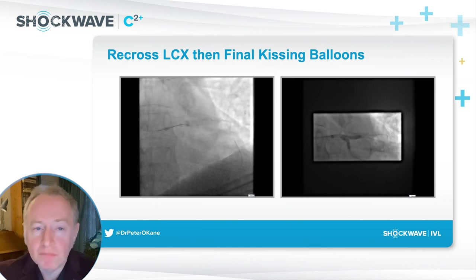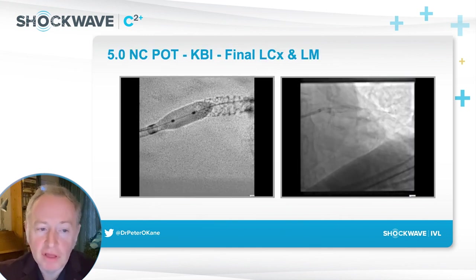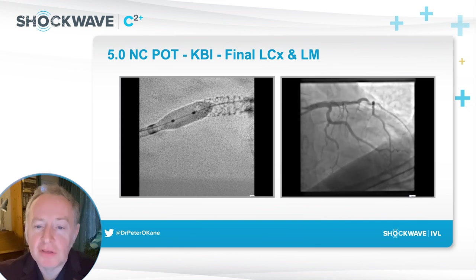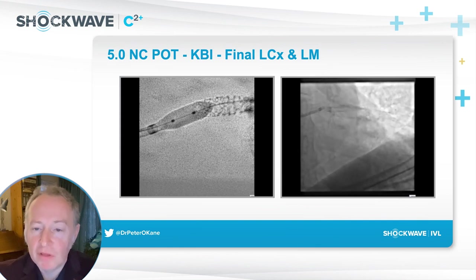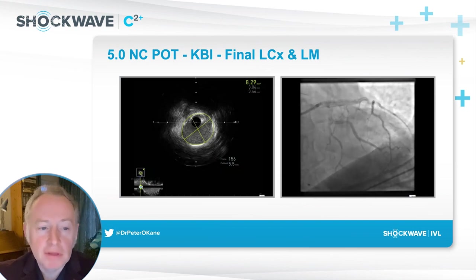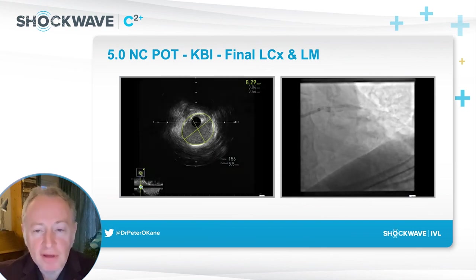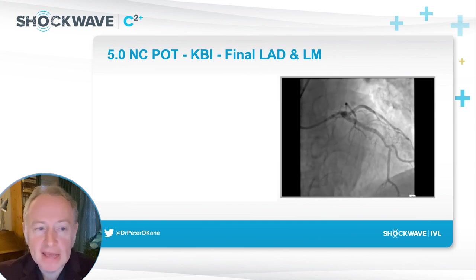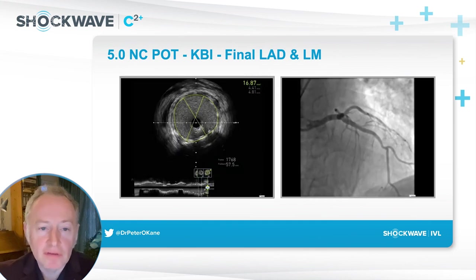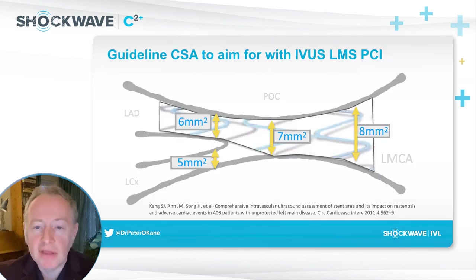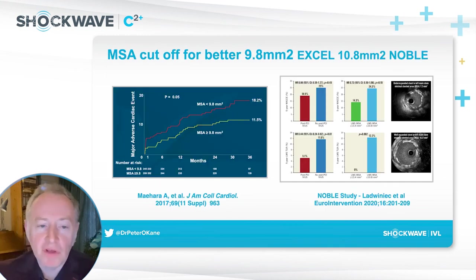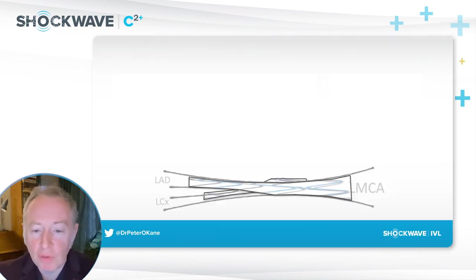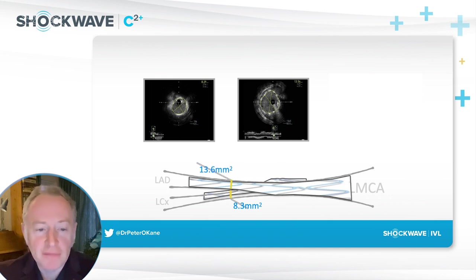We then perform a final POT, and we have, hopefully, a very good left main result angiographically. As you can see on the right of your screen, there is clearly some disruption that's behind the stent in the left main. We're then able to perform the IVUS imaging mandated in the trial: the circumflex ostium shows a CSA of around 8; in the LAD, a very nice result with a CSA of around 30; and the left main around 60, which matches what we found at the beginning — that's the normal vessel. For the purposes of the trial, we're aiming for the Kang criteria, and we're well above that. We know from Noble and EXCEL sub-studies that we need to achieve bigger dimensions in the left main itself.